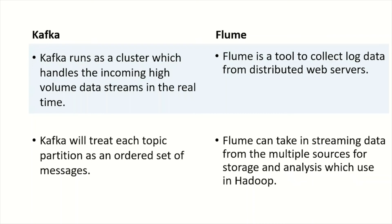Kafka runs as a cluster which handles incoming high-volume data streams in real time, whereas Flume is a tool to collect log data from distributed web services. They have two different use cases — Kafka is more about handling high volumes of real-time data, whereas Flume is a tool that collects data from distributed or different servers and stores it in one place.